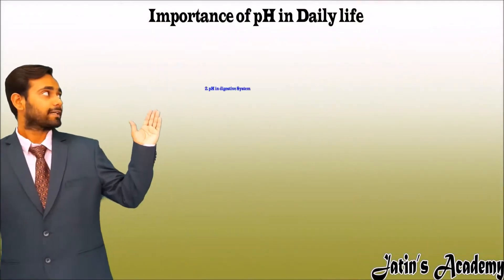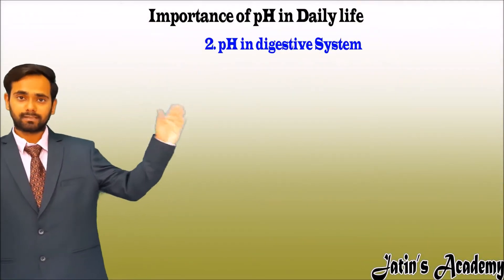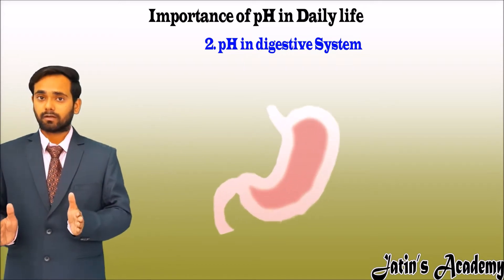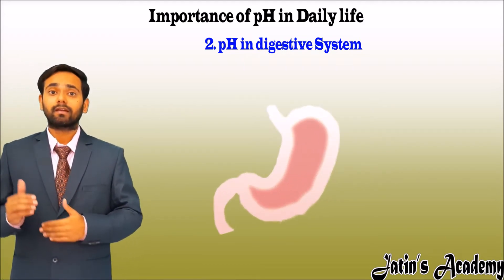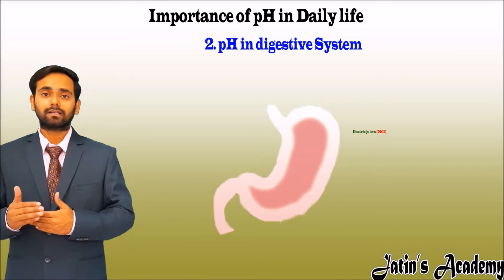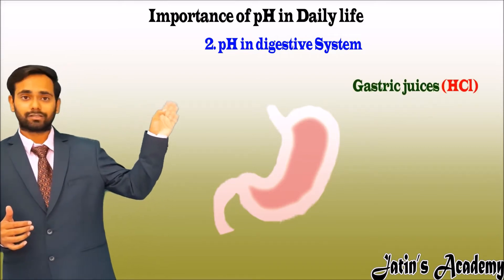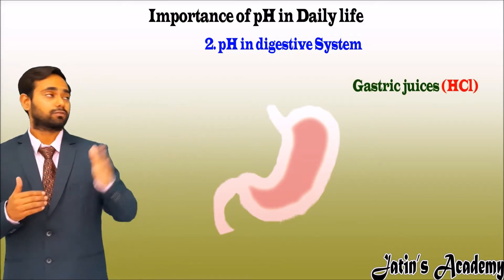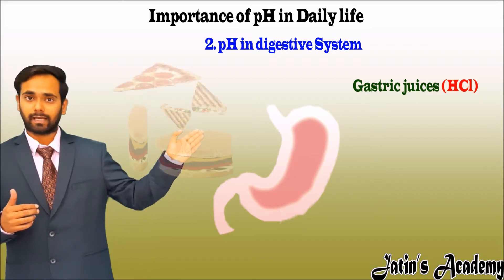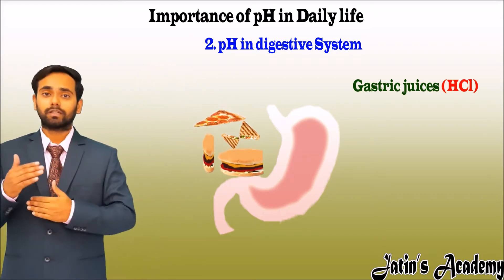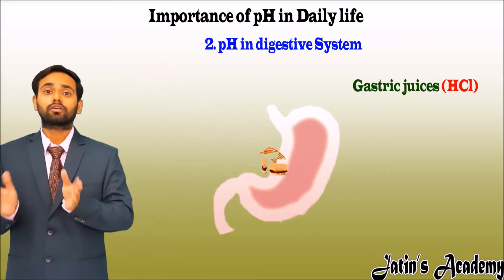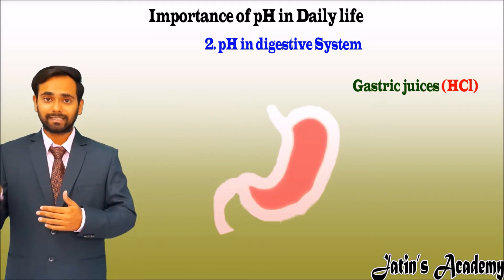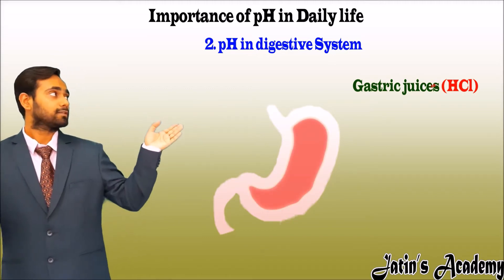Our second point is pH in the stomach. We know that in the stomach we have a gastric gland. The gastric gland produces gastric juices, one of which is HCl — hydrochloric acid. When we overeat or eat fast food, the amount of acid in our stomach increases.